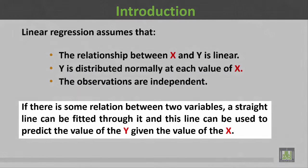If there is some relation between two variables, a straight line can be fitted through it and this line can be used to predict the value of y given the value of x. علاقة الانحدار الخطي تفترض: أولاً أن العلاقة بين x و y هي علاقة خطية، وأن المتغير التابع y يتوزع توزيعاً طبيعياً عند كل قيمة للمتغير المستقل x، وأن المتغيرات كلها مستقلة.